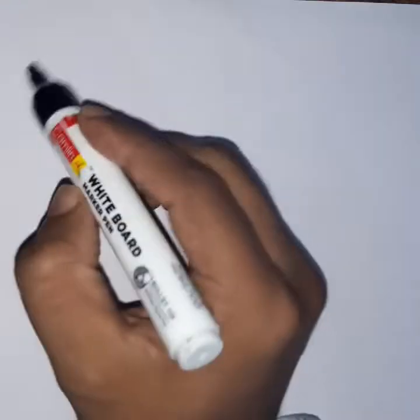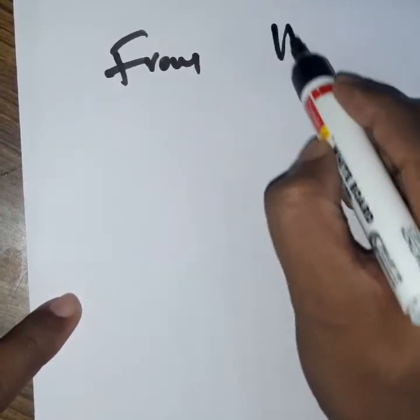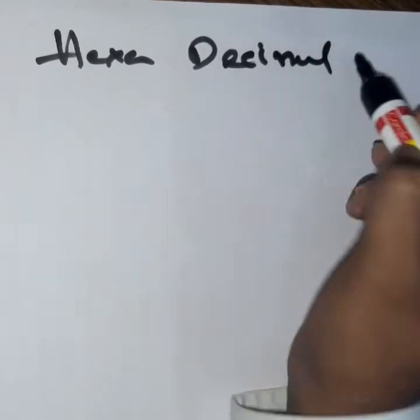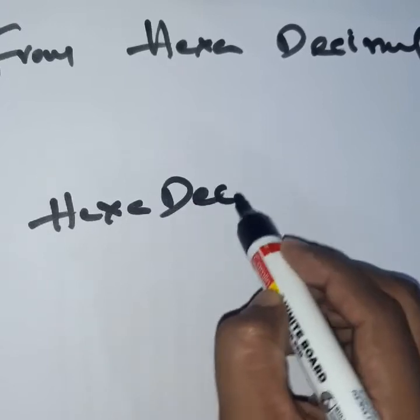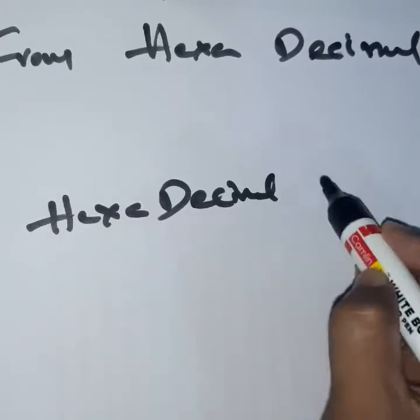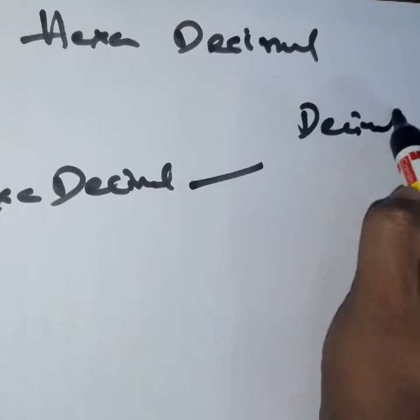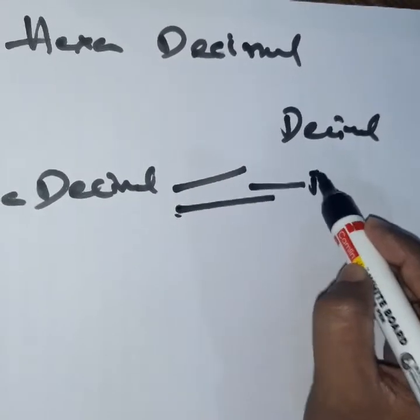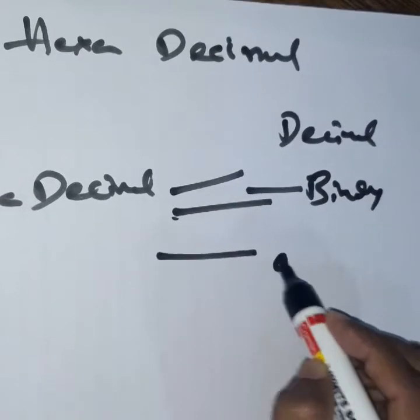We can also convert from hexadecimal — taking a hexadecimal number and converting it into decimal, binary, or octal.